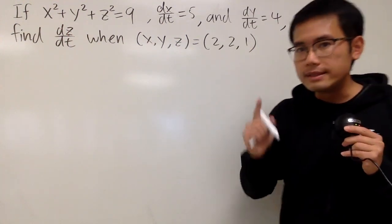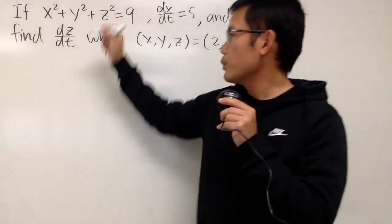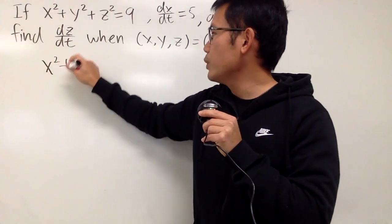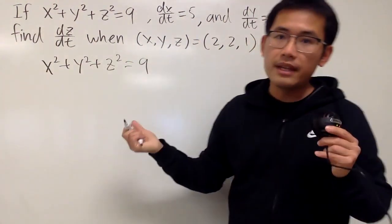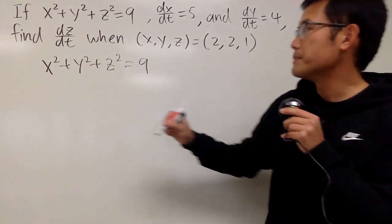So, x, y, and z, they are all functions of time, right? So, here we go, we are just going to write this down again, we will differentiate this with respect to time. Because, again, they are all functions of time.